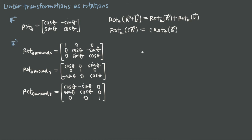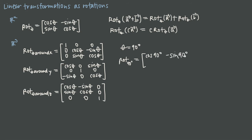As a simple example, let's say we want a transformation matrix that rotates all vectors in R2 by 90 degrees. That means theta equals 90 degrees. To find the transformation matrix, we plug 90 degrees into the R2 rotation matrix: cosine of 90 degrees, negative sine of 90 degrees, positive sine of 90 degrees, and cosine of 90 degrees.